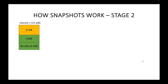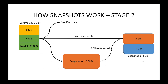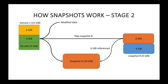In Stage 2, we modify 4 GB of the existing 10 GB data on the same EBS volume. We then take another snapshot — Snapshot B. Snapshot B will only back up that 4 GB of modified data. For the remaining 6 GB that was unchanged, Snapshot B simply stores a reference pointing to Snapshot A. So when restoring, it restores the 4 GB directly and fetches the 6 GB from Snapshot A.